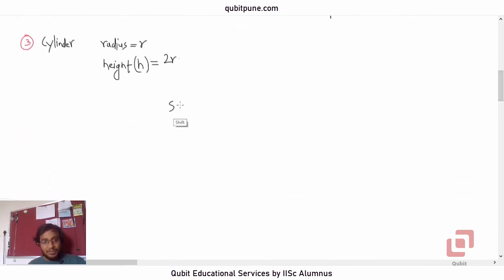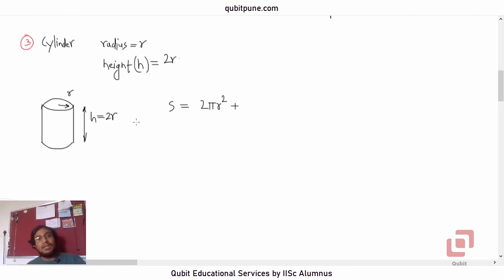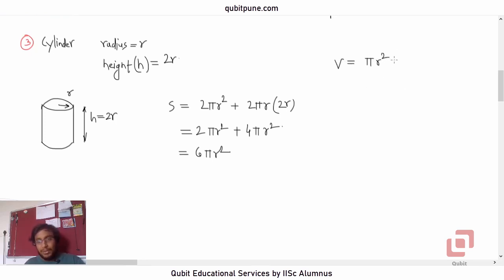What about the surface area? A right circular cylinder has three surfaces: the curved surface and two flat surfaces. The two flat surfaces contribute 2πr². The curved surface area is 2πrh, and since h = 2r, that gives 2π·r·2r = 4πr². So the total surface area is 2πr² + 4πr² = 6πr². The volume of the cylinder is πr²·h = πr²·2r = 2πr³.